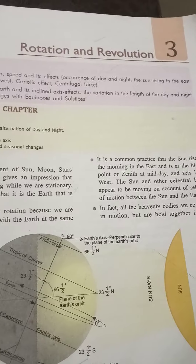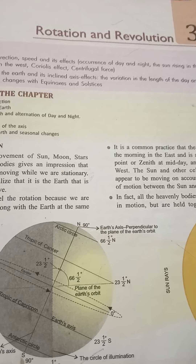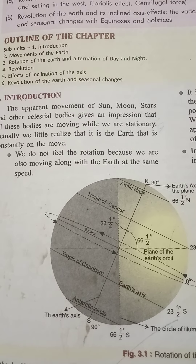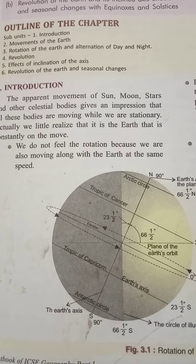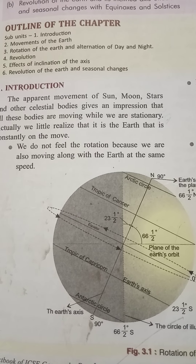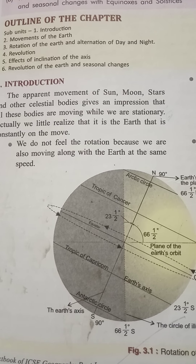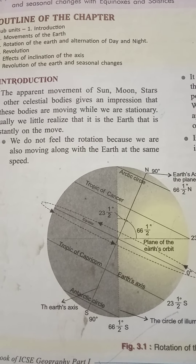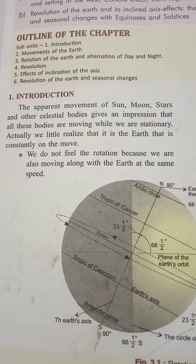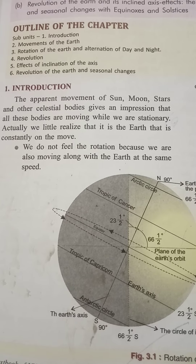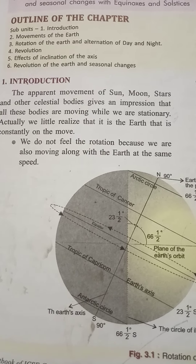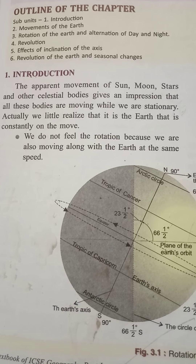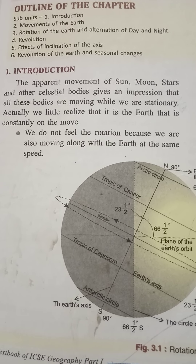Welcome class 9 to the third chapter of the syllabus — rotation and revolution. We are all acquainted with these terms: rotation is the movement of the earth around its axis once every 24 hours, and revolution is the movement of the earth around the sun once every 365 and a quarter days. The apparent movement of the sun, moon, stars, and other celestial bodies gives an impression that they are moving while we are stationary.